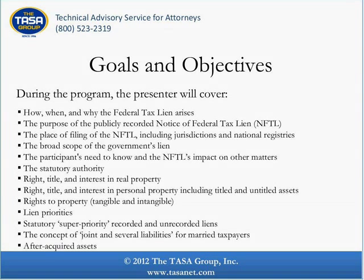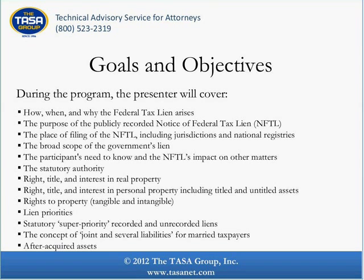The statutory authority. Right title and interest in real property. Right title and interest in personal property, including titled and untitled assets. Right to the property, both tangible and intangible. Lien property. Statutory super priority, recorded and unrecorded lien. The concept of joint and several liabilities for married taxpayers. And finally, after-acquired assets.